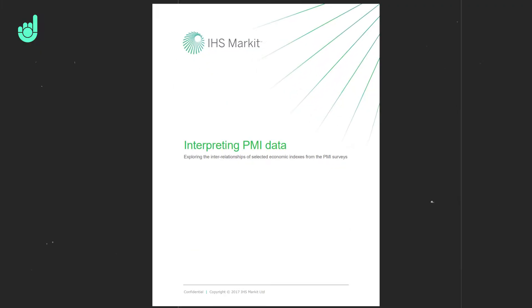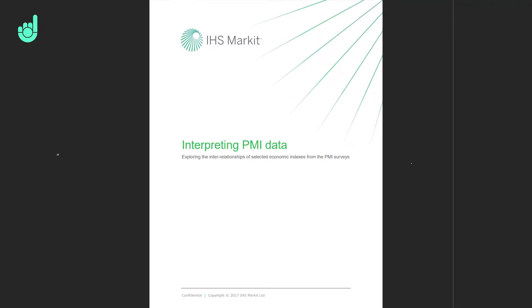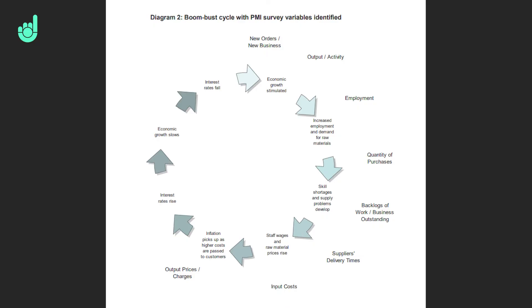Markit released a paper on interpreting PMI data, and a diagram they include shows the boom-bust cycle and how the variables — the questions being asked — relate to a number of important economic stages. Here's what Markit had to say about the diagram.